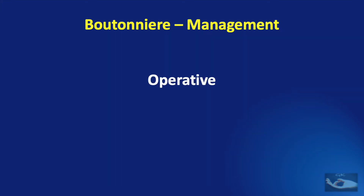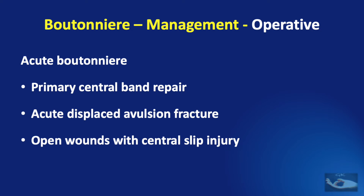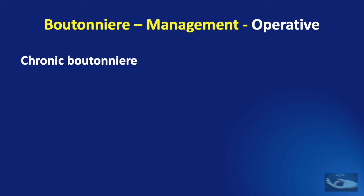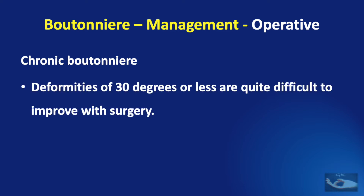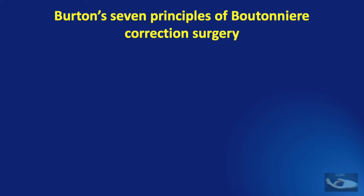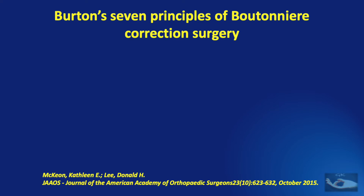Operative management of the Boutonniere deformity can be done in both acute and chronic cases. In the acute Boutonniere, a primary central band repair is done when there are open wounds with central slip injury and in acute displaced avulsion fractures. In the chronic Boutonniere deformity, deformities of 30 degrees or less at the PIP joint are quite difficult to improve with surgery. Before any surgical management of a chronic Boutonniere, we need to remember Burton's 7 principles.